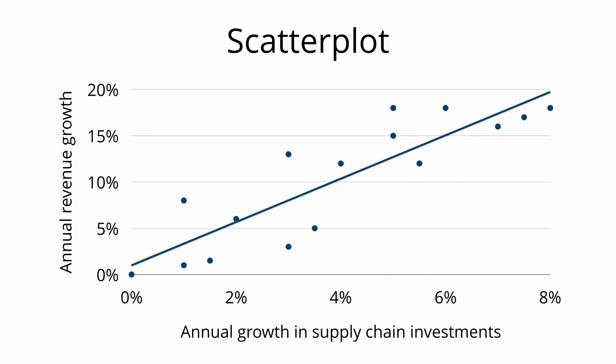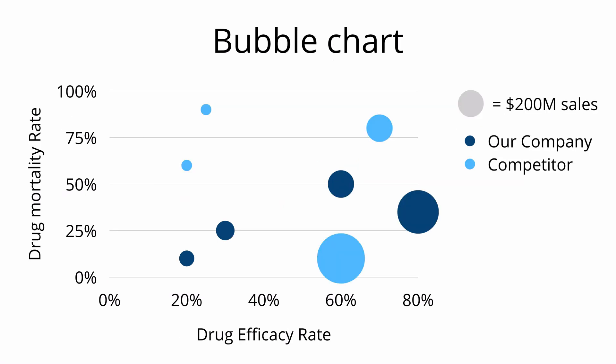A scatter plot shows dots to visualize the values of two different variables, labeled on the x-axis and y-axis. In this example, the x-axis represents annual growth in supply chain investments, while the y-axis shows annual revenue growth. If we look for patterns among the dots, it appears that as annual growth in supply chain investment increases, annual revenue growth increases as well. We can add a trend line to show this correlation. Therefore, if a company has 10% annual growth in supply chain investments, we can predict that their annual revenue growth will be greater than 20%.